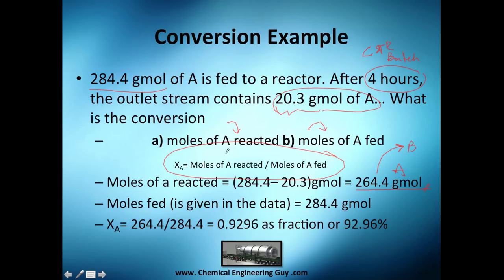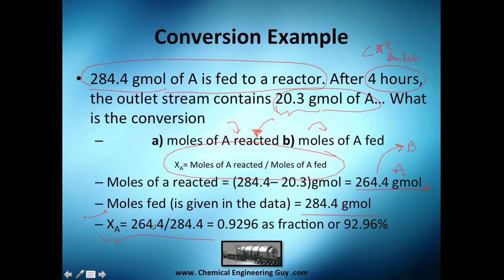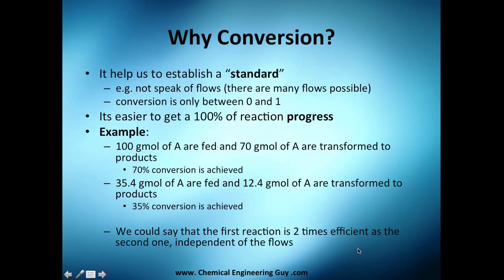We don't use the 20.3 grams — those are the moles of A that did not react. We want the ones that actually reacted, which is 264.4. The moles fed are 284.4. Applying the formula: X_A = 264.4 / 284.4 = 0.92, or 92% conversion — relatively high, converting almost everything.